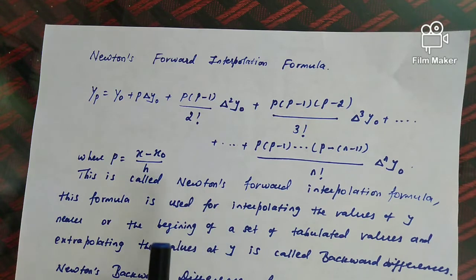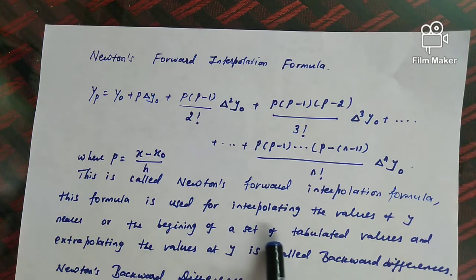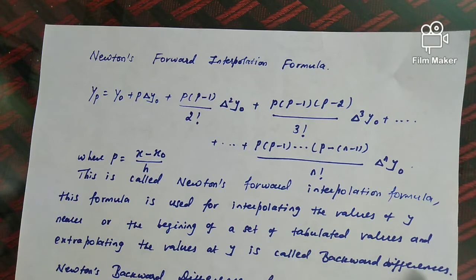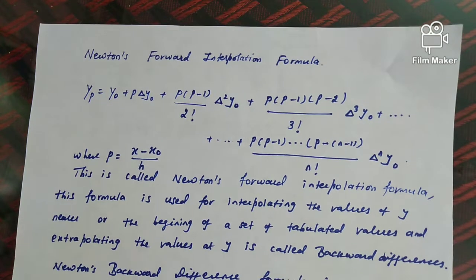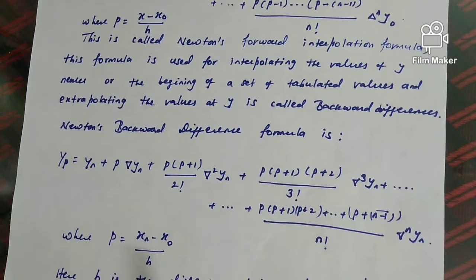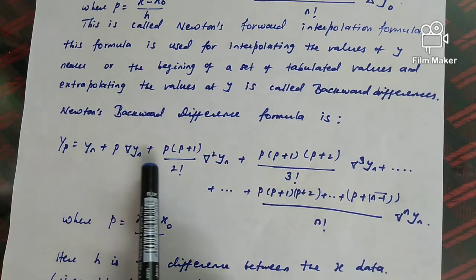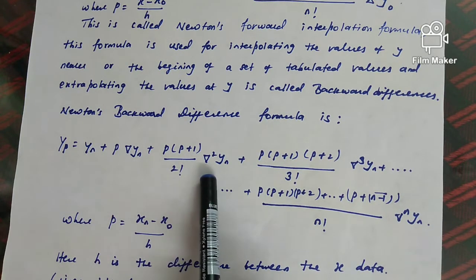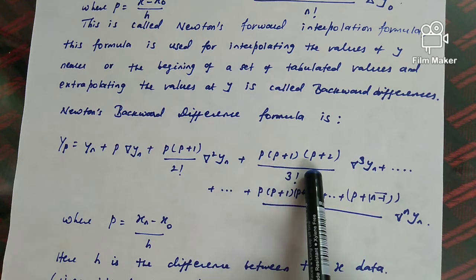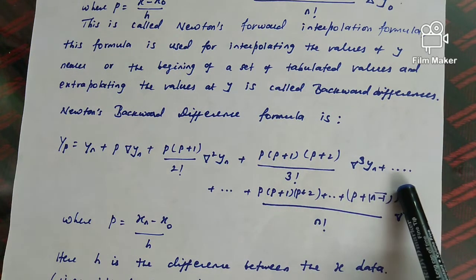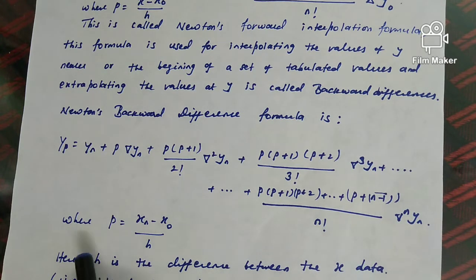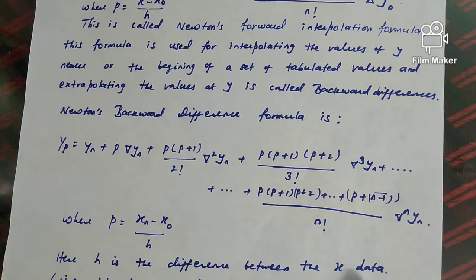This formula is used for interpolating values of y nearer to the beginning of a set of tabulated values. Newton's backward difference formula is yp = yn + p·∇yn + p(p+1)/2! · ∇²yn + p(p+1)(p+2)/3! · ∇³yn, and so on up to the nth term, where p = (x − x naught)/h and h is the difference between the x data.